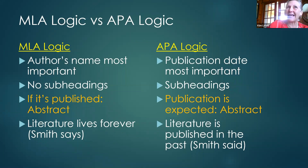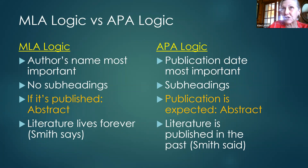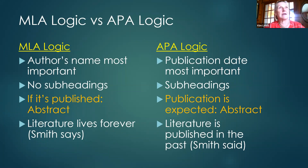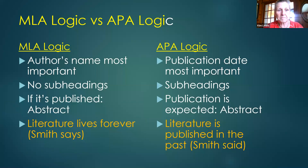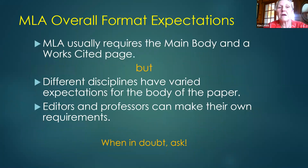In MLA, the idea is that literature lives forever, so when you talk about what somebody says you use the present tense — you would say 'Smith says' and then paraphrase or quote. In APA it's more like reporting what you found, so it's 'Smith said.' That's a key difference between the two.